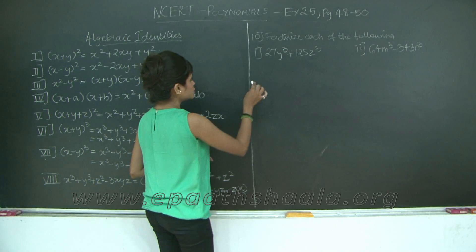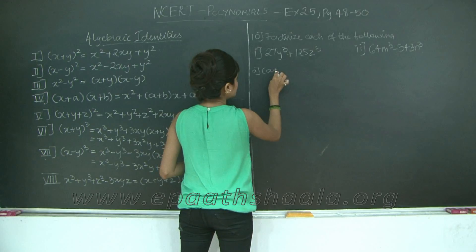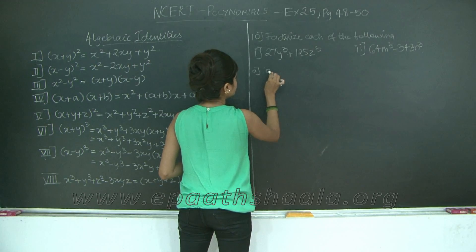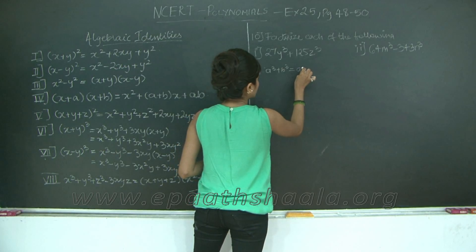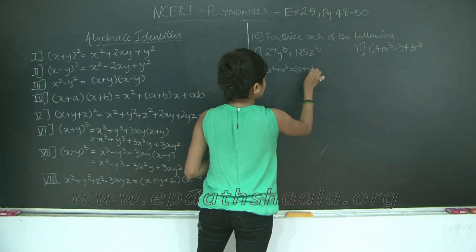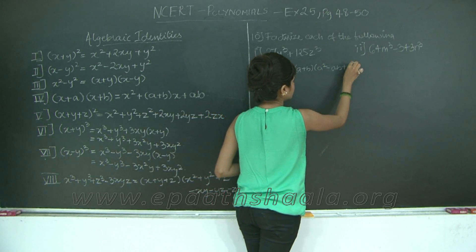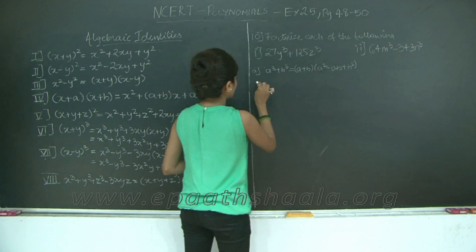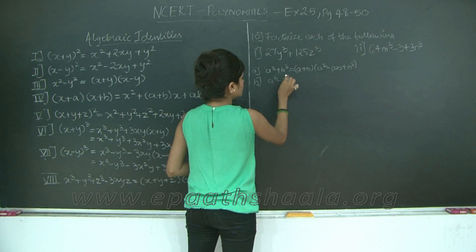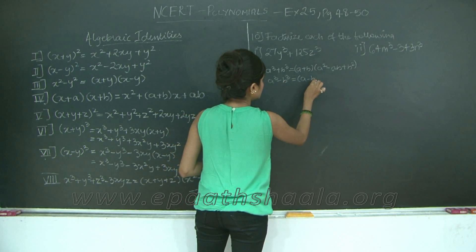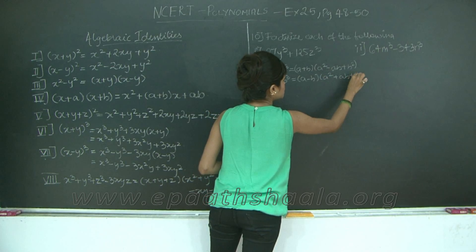I will write them for you. The first one is a cube plus b cube is equal to a plus b into a square minus ab plus b square. And the second one is a cube minus b cube is equal to a minus b into a square plus ab plus b square.